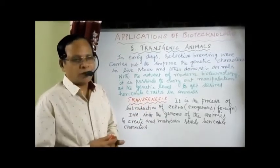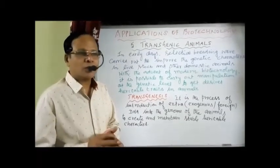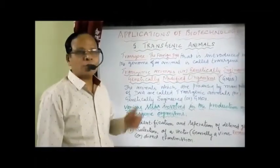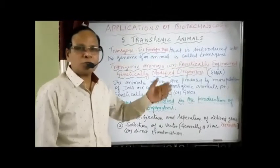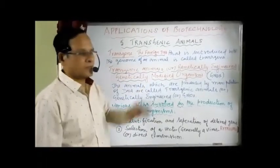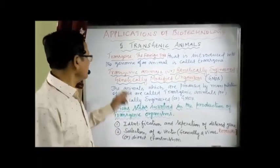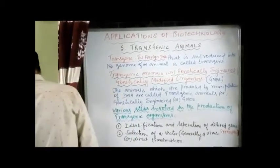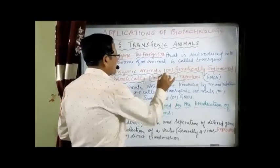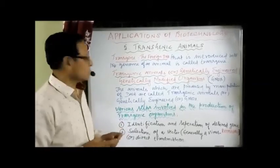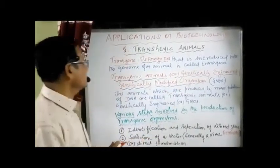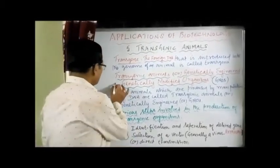What do you mean by transgene? The foreign DNA that is introduced into the genome of an animal to produce a transgenic organism is called the transgene. What do you mean by transgenic animal, or genetically modified organisms (GMOs), or genetically engineered organisms? The animals which are produced by means of transgenesis are called transgenic animals, or GMOs, or genetically engineered organisms — three names all meaning the same thing.